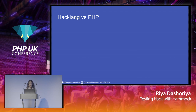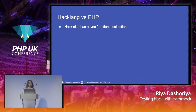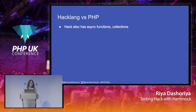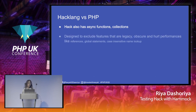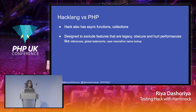There are other features available in Hacklang but not in PHP. Hack has async functions — while Hack does not support multi-threading, multitasking is provided via async functions. You can run a second query while the first query is still in progress, and it runs as smooth as synchronous functions. Hack also has seven types of collections: vector, map, set, pair, immutable vector, immutable map, and immutable set. Hack is also designed to exclude features that are legacy, obscure, or hurt performance, including global statements, references, and case-insensitive name lookup.